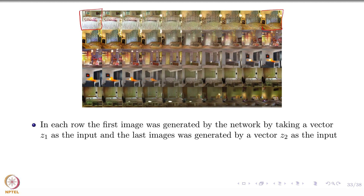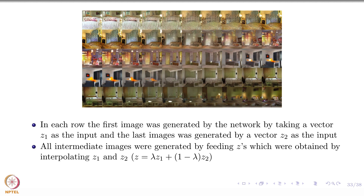Similarly, the last image you see is something generated by a different Z2. Both Z1 and Z2 were randomly sampled from the normal distribution. Now, an interesting thing that these guys did is they took all Zs by interpolating Z1 and Z2. Interpolation means taking a combination: lambda times Z1 plus 1 minus lambda times Z2. So these are two points Z1 and Z2, and interpolation gives all the points between them — in a higher dimension, not just one or two dimensional.